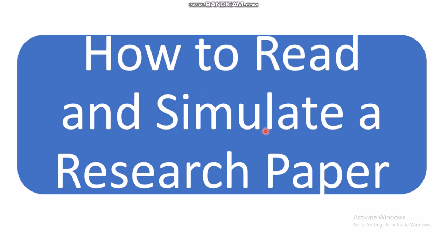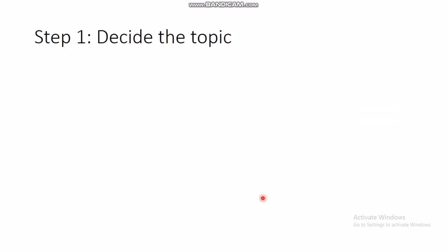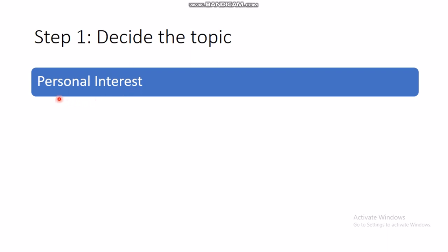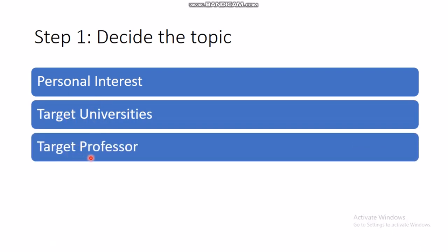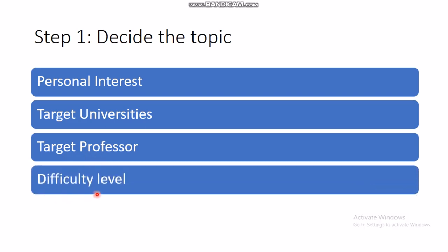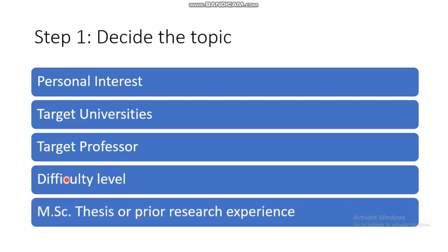Without further delay, we come to the main topic: how to read and simulate a research paper. I will start from scratch, so for some of you this might be a little boring in the beginning, but I hope by the end it will be useful for everyone. Research is usually done by PhD or master's students. Master's students have only three to six months for their thesis, so we will focus mainly on PhD research. Once you aspire to enter a PhD program, you first have to decide the topic of your research.